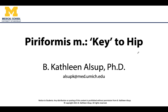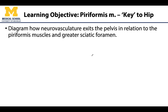Hello all, this is Dr. Alsip and we will be talking about the piriformis muscle and how it can help us organize the neurovasculature in the deep posterior hip region. Specifically, we are talking about the piriformis muscle after it has exited the greater sciatic foramen on its way to the greater trochanter, so that greater sciatic foramen is an important component here as well.